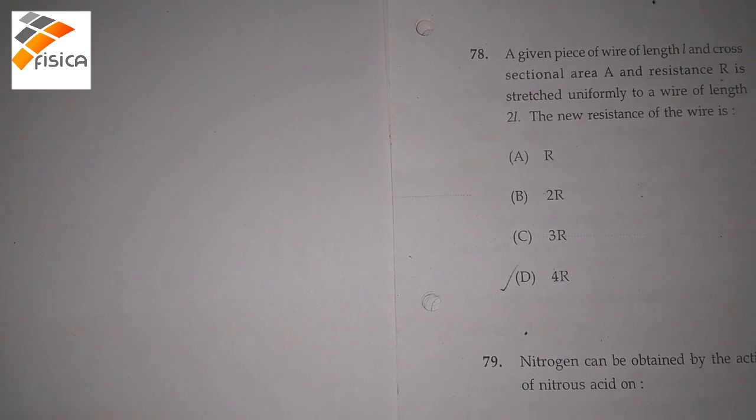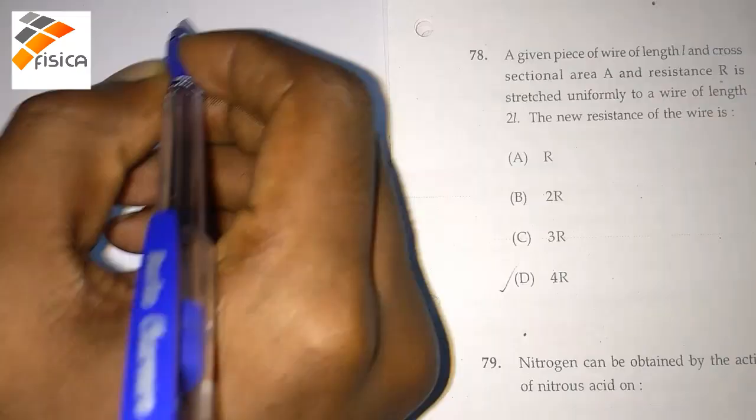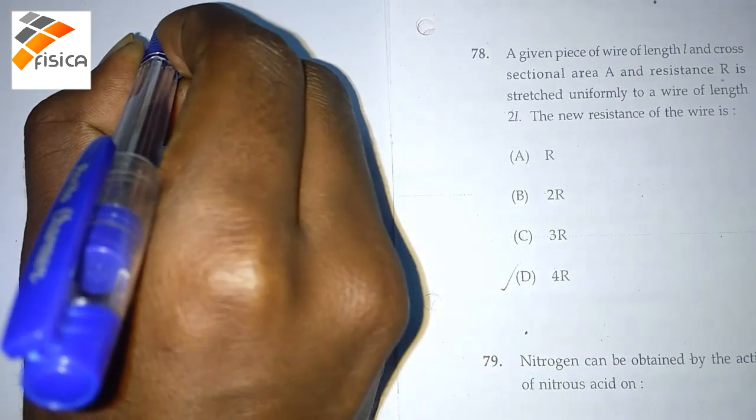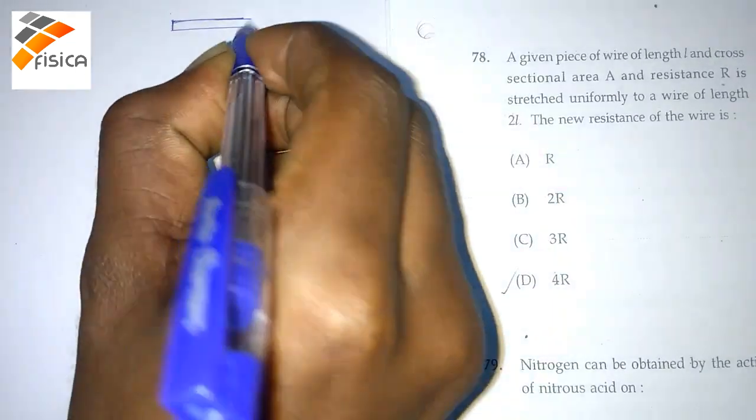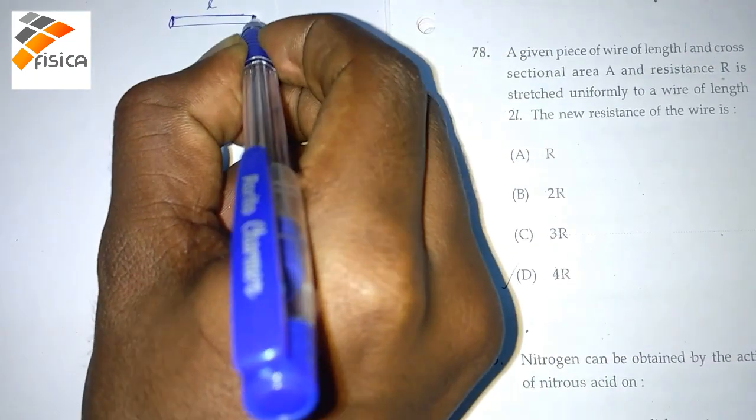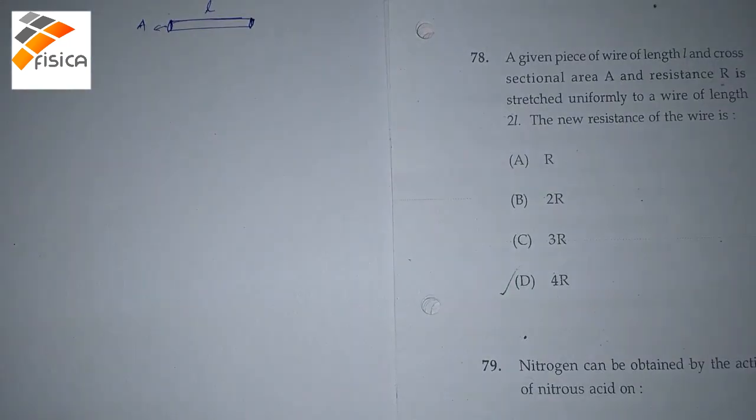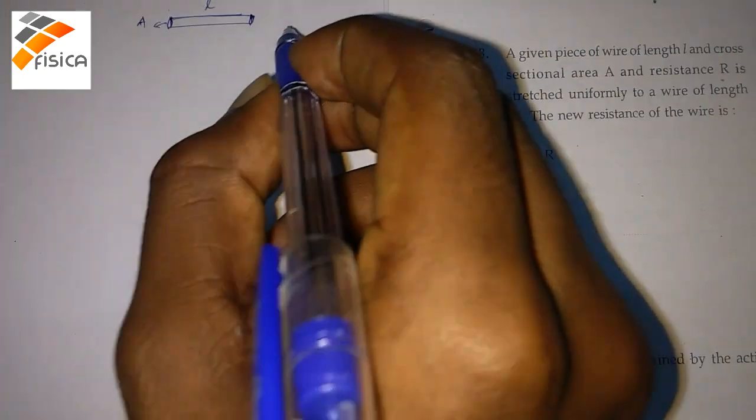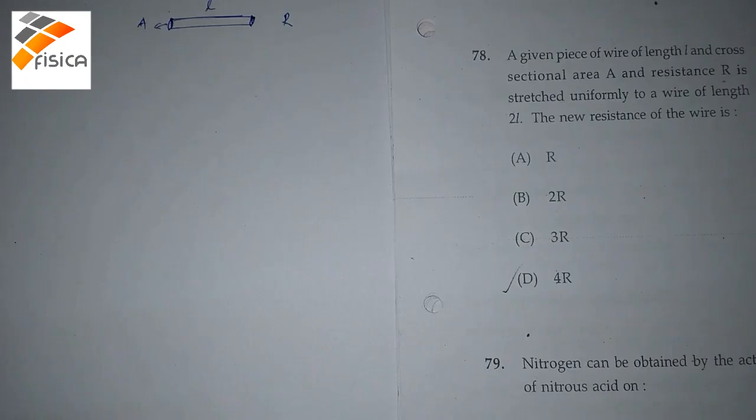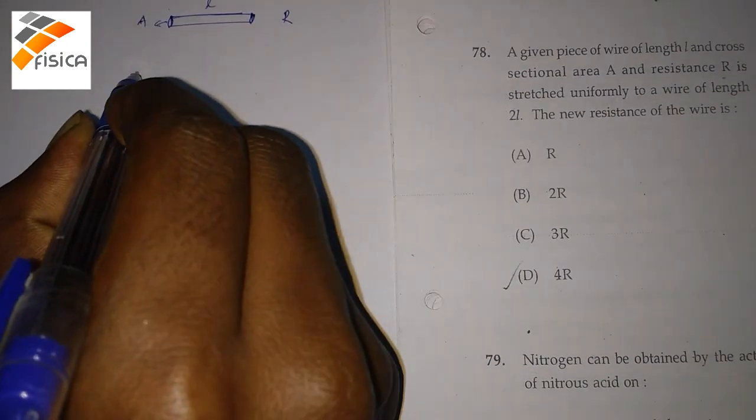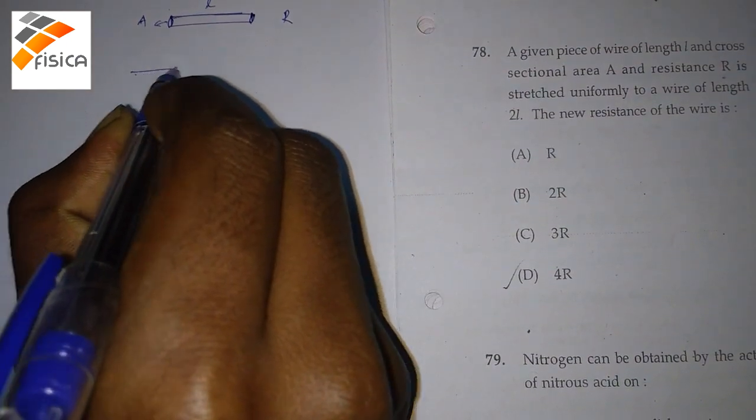In the question, first we have a wire of length L and having some area of cross-section A. And the resistance is R. And now, we are uniformly stretching the wire to 2L length.